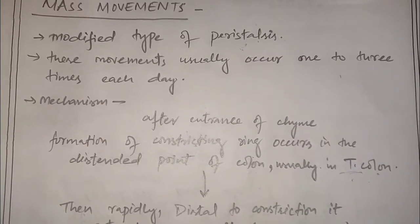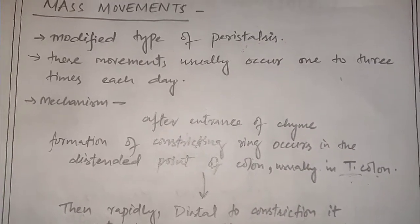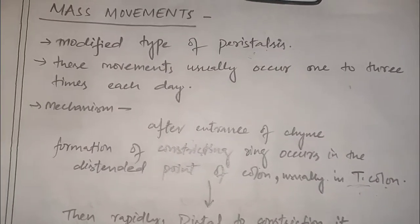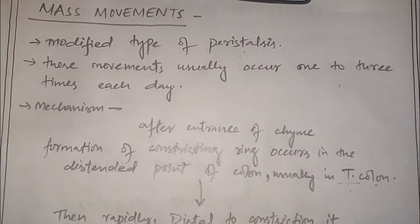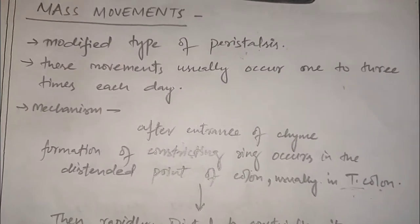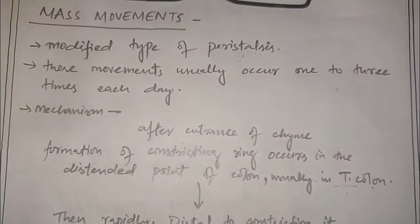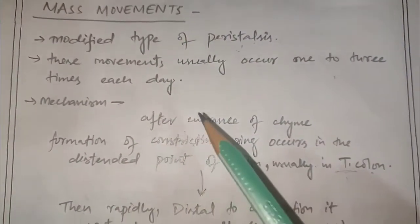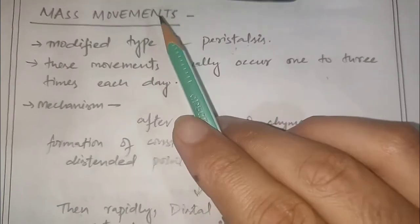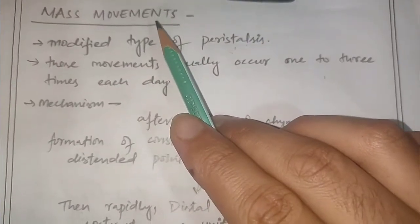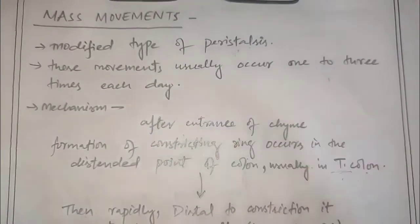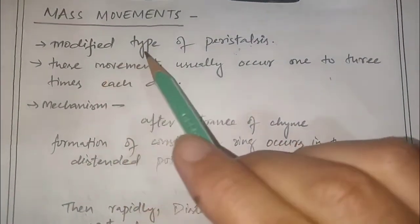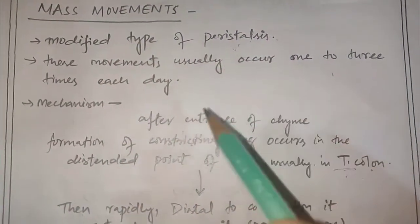Now let's go through propulsive movements. Propulsive movements in small intestine are known as peristalsis, while propulsive movements in large intestine are known as mass movements. Mass movements are found only in the large intestine. These are a modified type of peristalsis and usually occur one to three times each day.